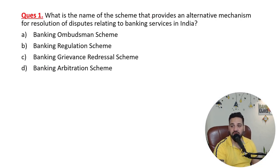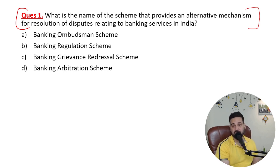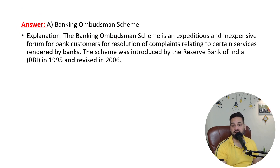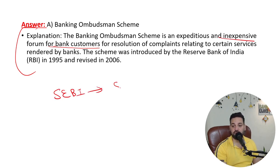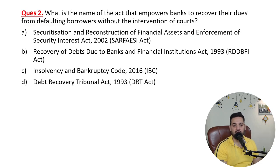What is the name of the scheme that provides an alternative mechanism for resolution of disputes related to banking services in India? If you have a dispute with your banker and resolution is not given, you can go to the Banking Ombudsman Scheme — it is an inexpensive forum for bank customers. In case of investments and SEBI, there is the SEBI SCORES scheme. So remember: for banking complaints, it is the Banking Ombudsman; for investments and financial markets, it is SEBI SCORES.